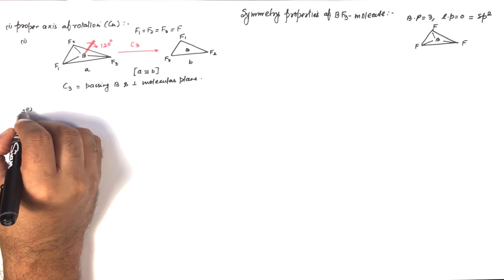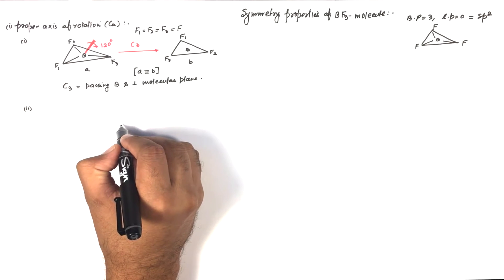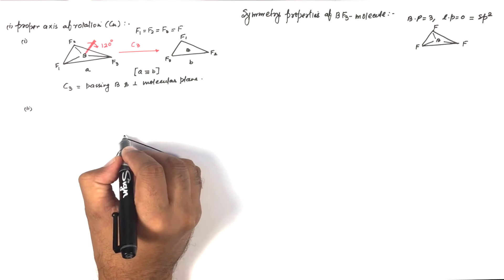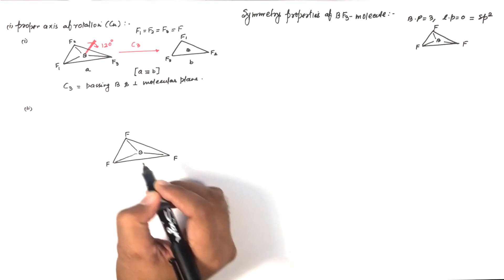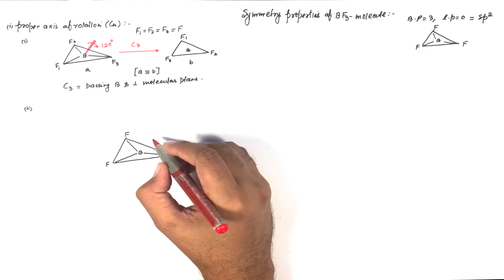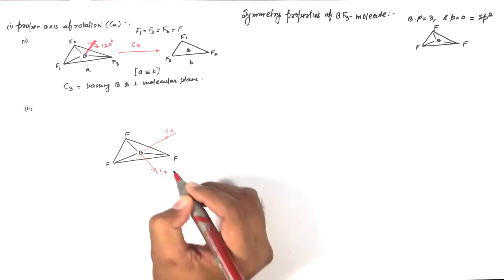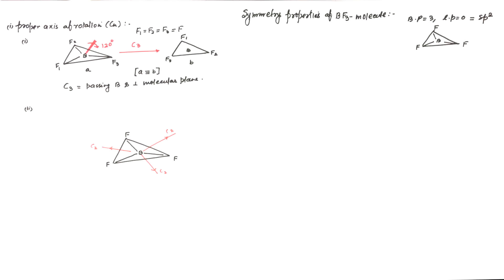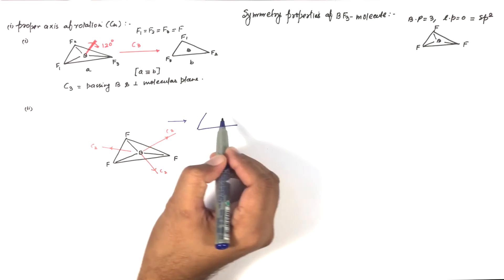Another symmetry element — a proper axis of rotation C2 — is also present. Redrawing the BF3 molecule, we find three C2 axes present. When we perform the C2 operation about each C2 axis, we get a new configuration which is equivalent to the original one.